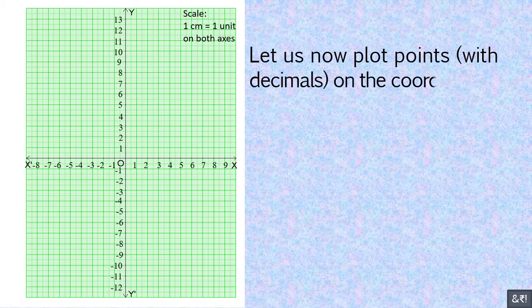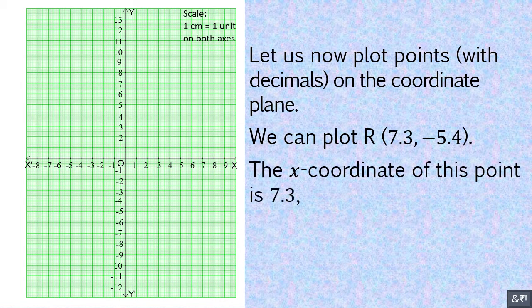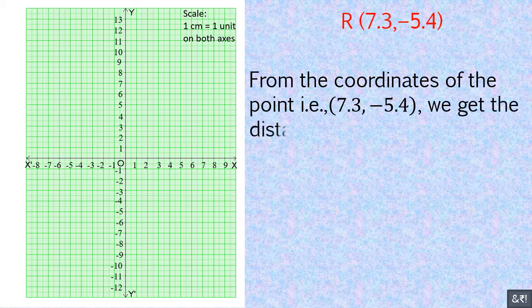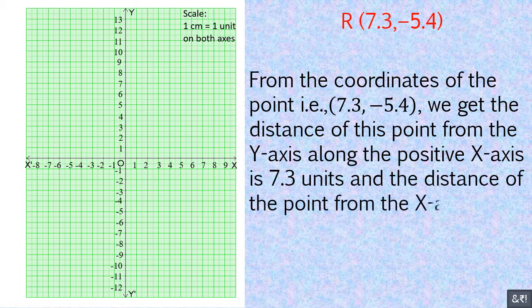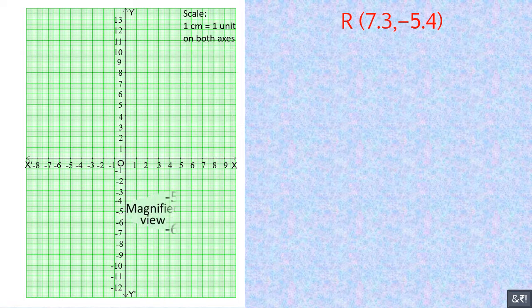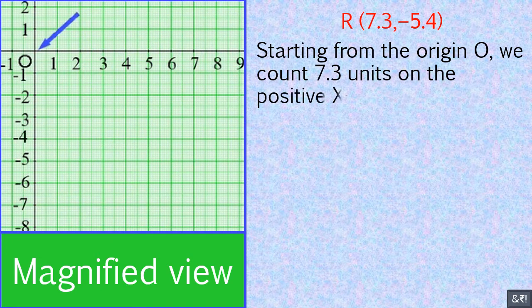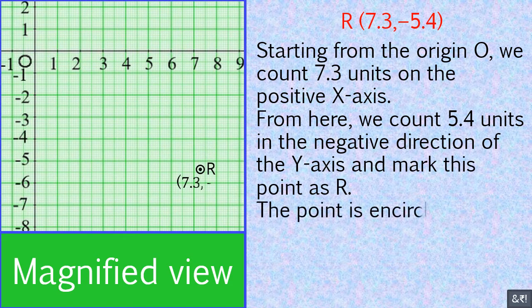Let us now plot points with decimals on the coordinate plane. We will plot the point (7.3, −5.4). The x-coordinate is 7.3 and the y-coordinate is −5.4. The point is 7.3 units from the y-axis along the positive x-axis, and 5.4 units from the x-axis along the negative y-axis. Counting: 7.1, 7.2, 7.3 along the positive x-axis, and −5.1, −5.2, −5.3, −5.4 along the negative y-axis. Starting from origin O, we count 7.3 units on the positive x-axis, then 5.4 units in the negative direction of the y-axis, and mark the point as R. The point is encircled and the coordinates are written near it.